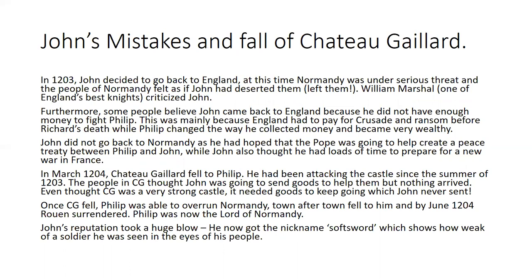John's mistakes and the fall of Château Gaillard: in 1203, while John was trying to push Philip back, he decided to return to England - a really confusing decision given Normandy was under serious threat. Even William Marshall criticized this as a bad move, and many in Normandy felt John had deserted them. Some historians believe John came back because he didn't have enough money to keep fighting, as England had already paid for a crusade and Richard's ransom, while Philip had reformed his finances and become very wealthy. John thought the Pope could broker a peace treaty and that he had more time to prepare - but he never returned to Normandy.